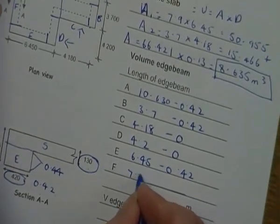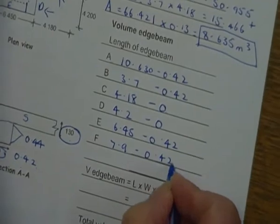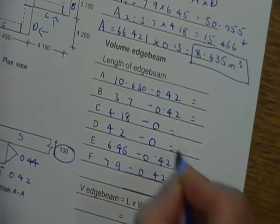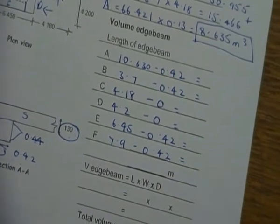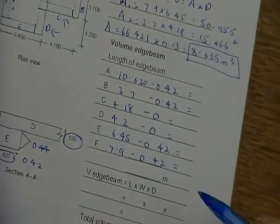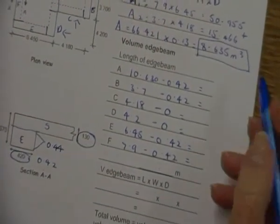E, 6.45 minus 0.42. And F, I need these two sides together, so that's going to be my 7.9 minus 0.42. Now I want you guys to use your calculator and find out the figures here.